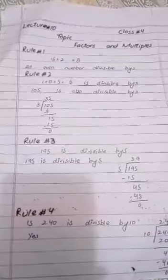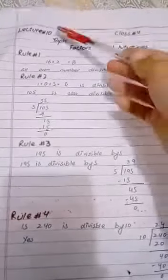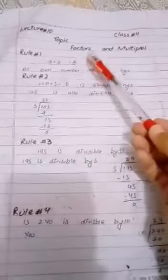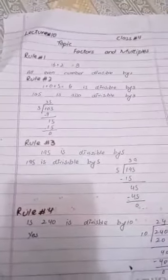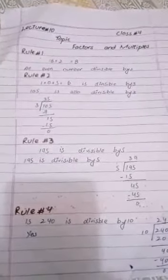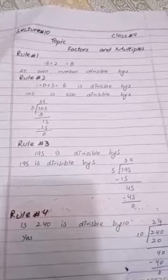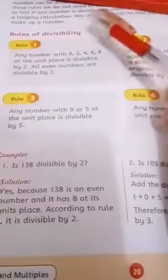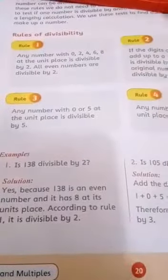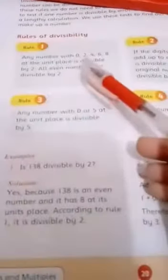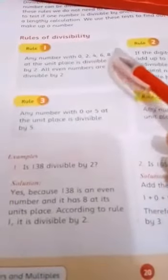Welcome to Randy. I hope all of you are well. This is lecture number 10, class 4, and our topic is factors and multiples. We will study the rules of divisibility. Rule number 1: any number with 0, 2, 4, 6, or 8 at the unit place is divisible by 2.